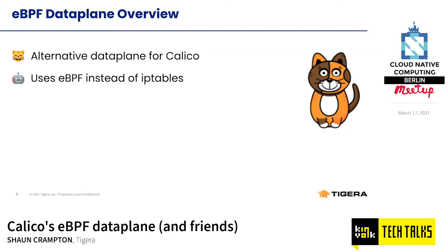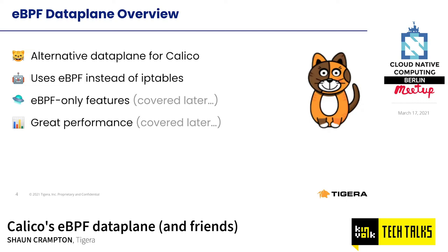With eBPF, instead of the standard Linux networking technologies the standard Calico data plane is based on — mainly iptables and Linux routing — we use eBPF. The reason is that we can do things with eBPF that we can't do in the old world: eBPF-only features and great performance. We'll cover those trade-offs in detail.